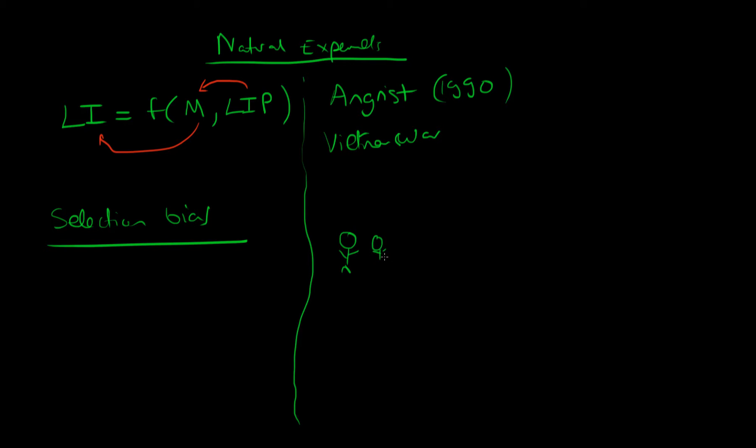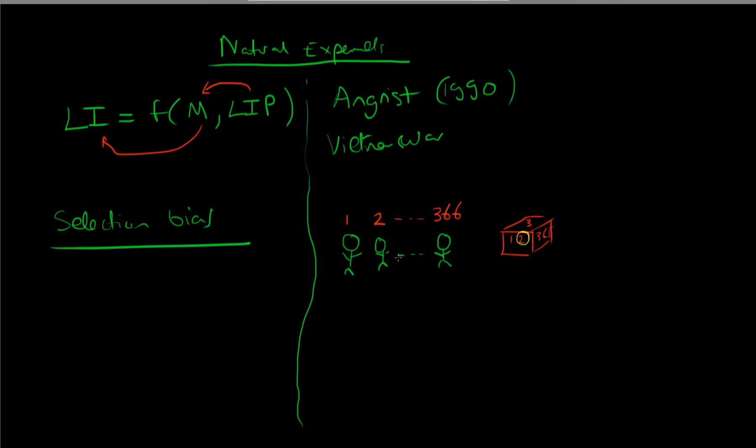He took advantage of a natural experiment in this case which was to do with the draft process. So in 1969, the way in which individuals were conscripted to the military was people were assigned a number, and that number went from 1 to 366, each number corresponding to a birthday. All these numbers were then put into a box and one was pulled out at random.